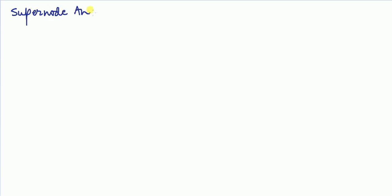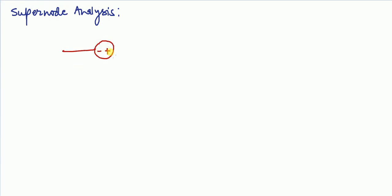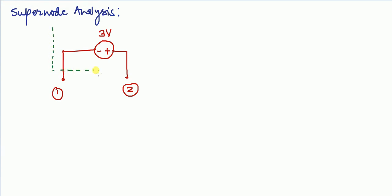Super node analysis. When a voltage source is connected between two non-reference nodes, it is called a super node. Here node one and node two are two non-reference nodes, and an independent voltage source of three volts is connected between them, so this will be a super node. The voltage source could be a dependent or independent voltage source.